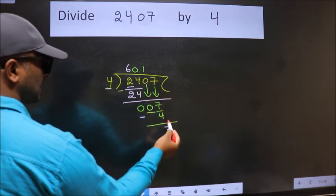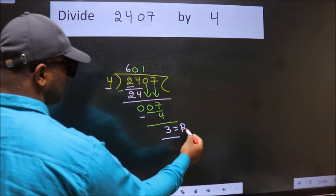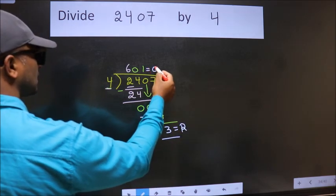No more numbers to bring it down, so we stop here. This is our remainder and this is our quotient.